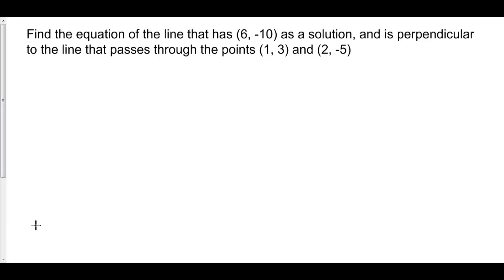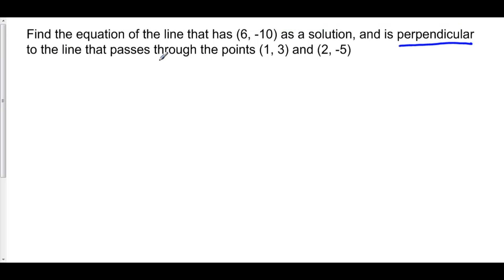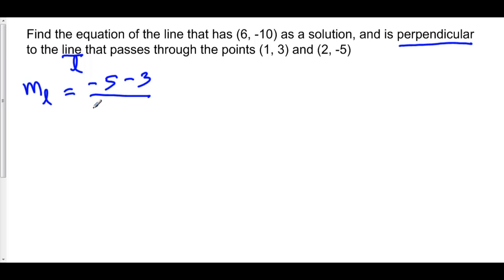Find the equation of the line that has six comma negative ten as a solution, and is perpendicular to the line that passes through the points one comma three and two comma five. Well, if our line is perpendicular to this one, then our line has the negative reciprocal slope of this one. The slope of line L is equal to y2, which is five, minus y1, which is three, over x2, which is two, minus x1, which is one. So this slope is two over one, which is two.